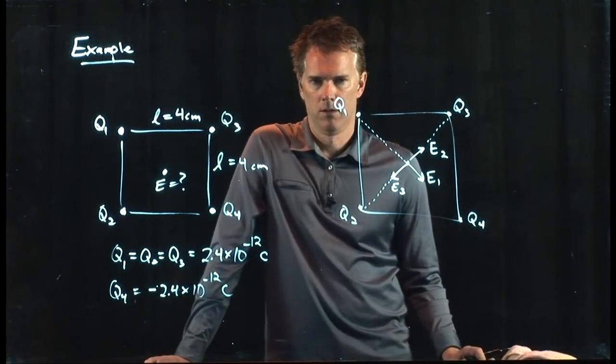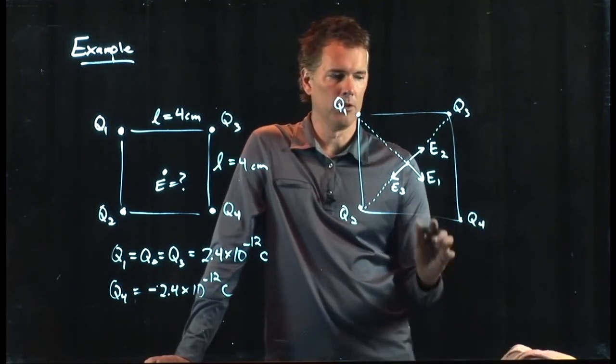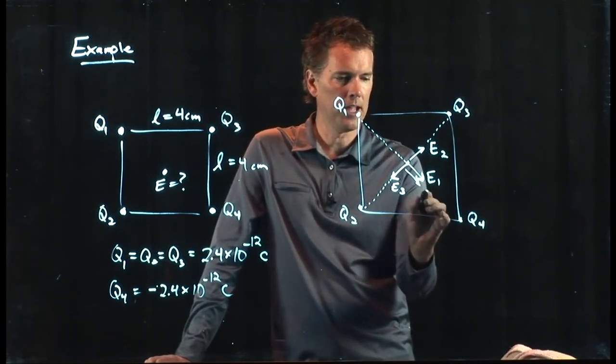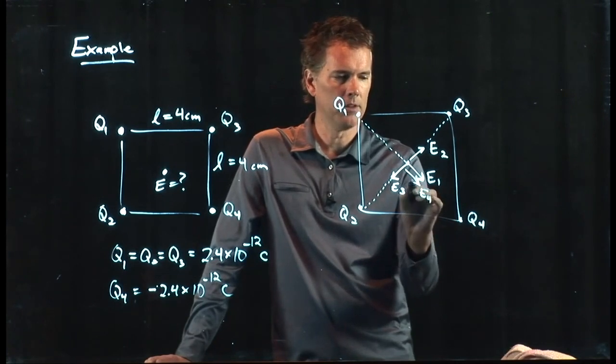And then finally, q4 is a negative, and so the electric field from q4 is going to point towards it in the same direction as E1.